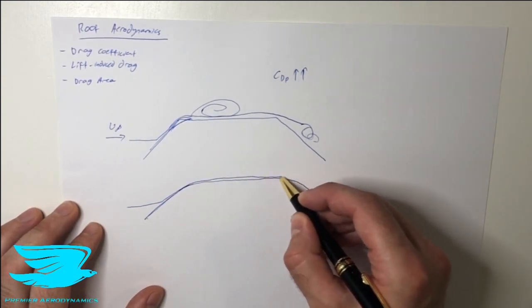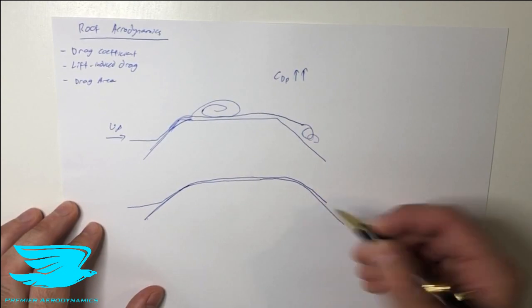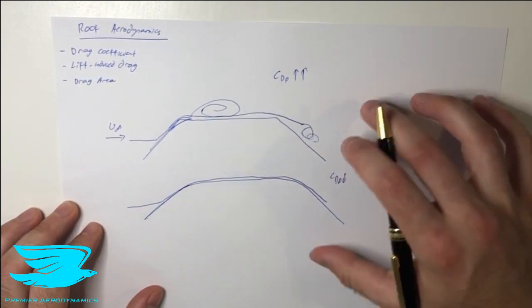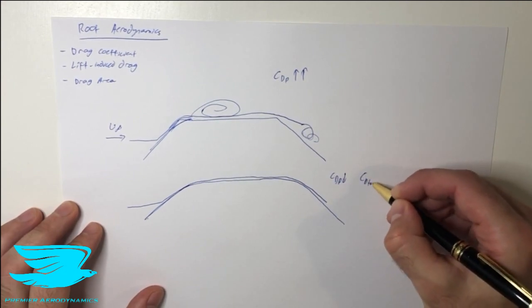And then as it goes around the back, it stays attached as well. So that means that the pressure drag coefficient drops now, and we get a lower overall drag coefficient. So the total drag coefficient drops.